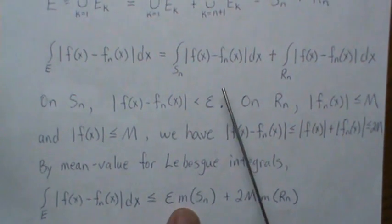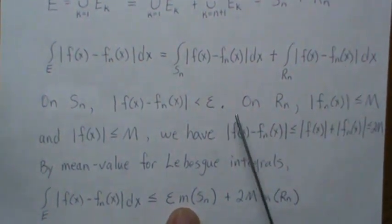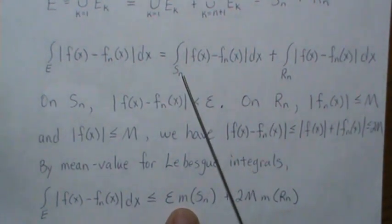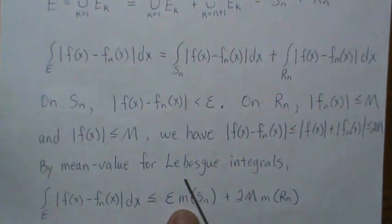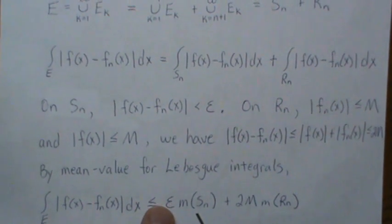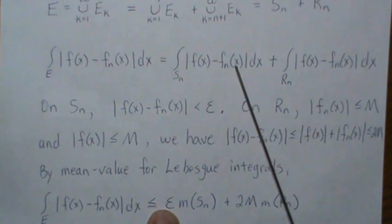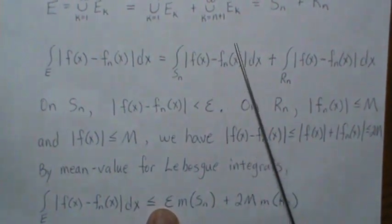and remember, this is two pieces, which is this and that. So here, the measure of S_N is what this is. And then epsilon is actually the upper bound of this.